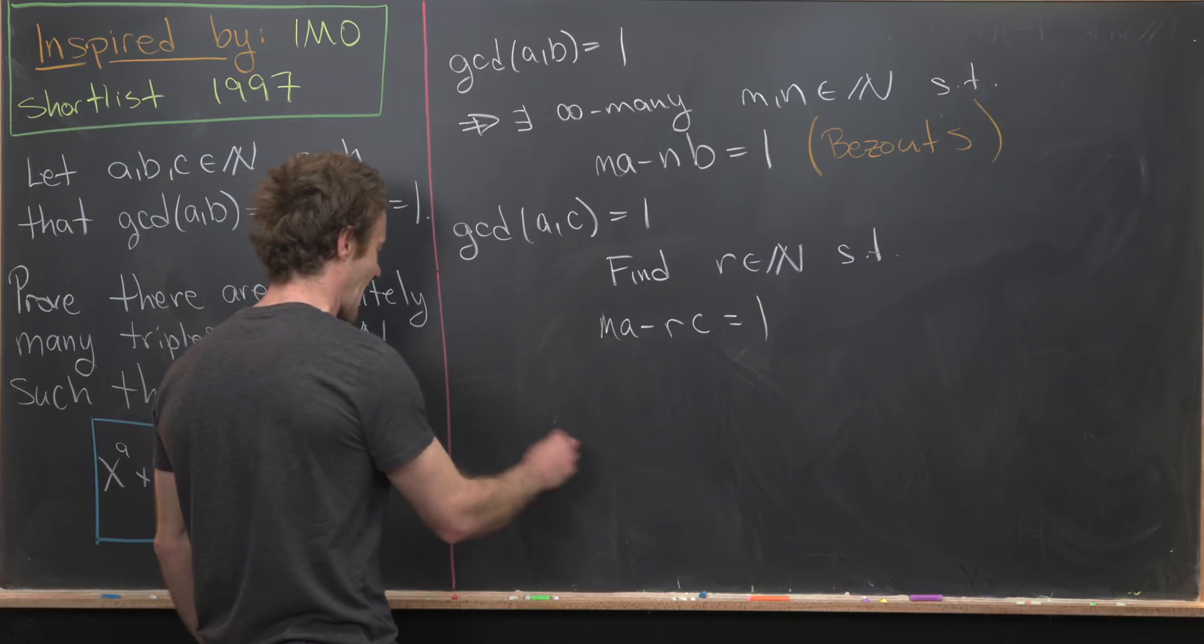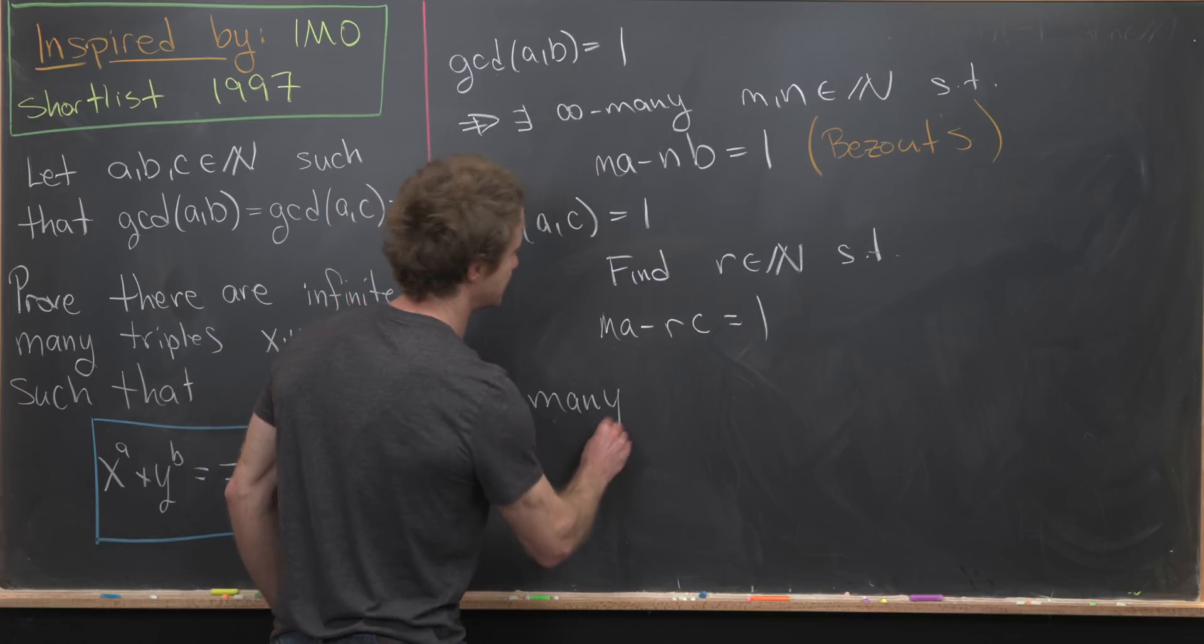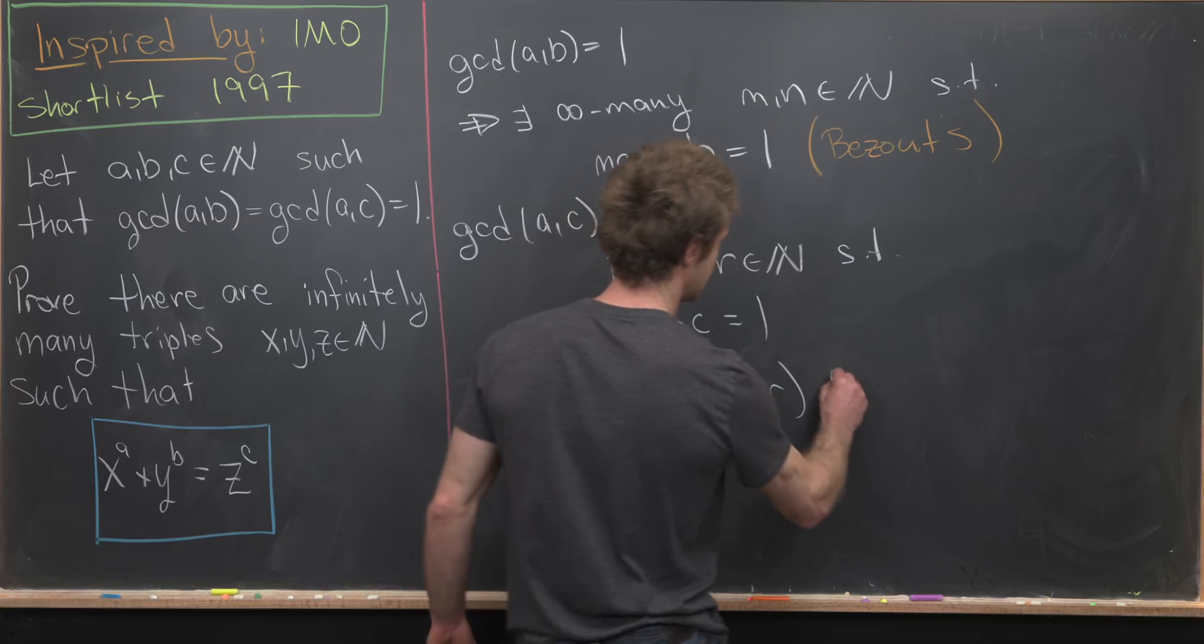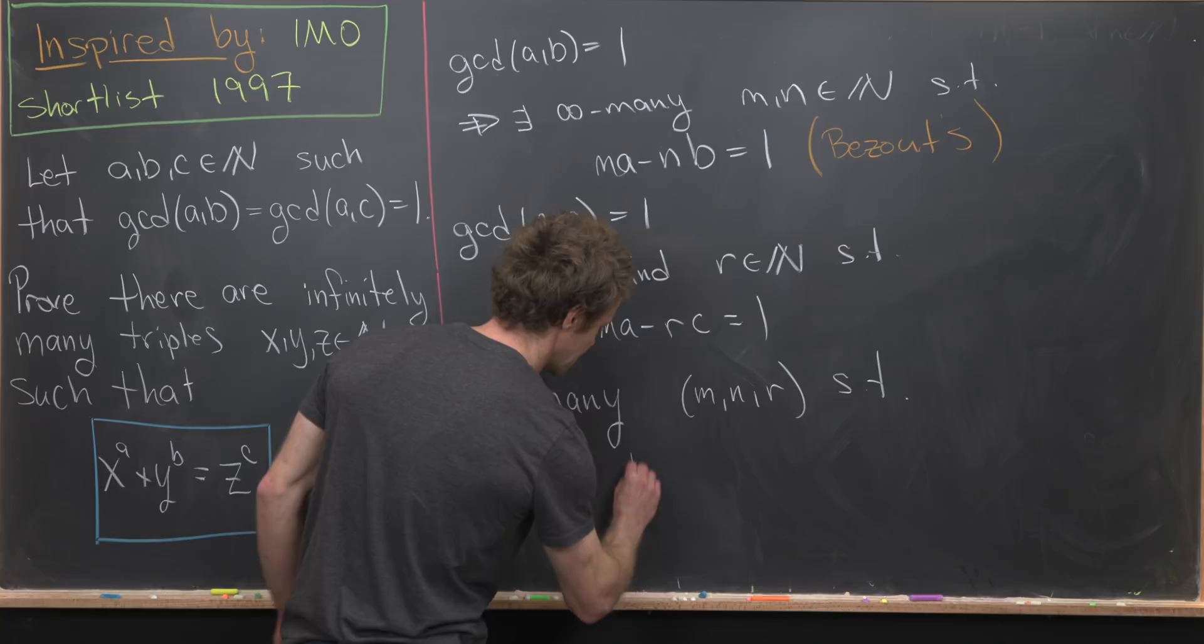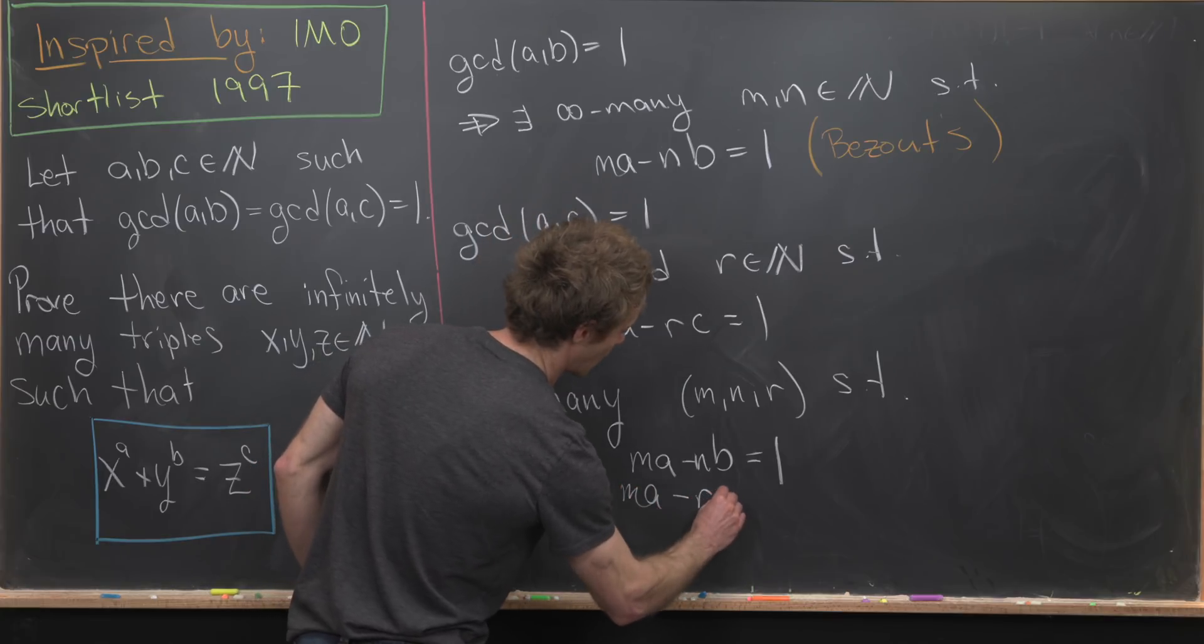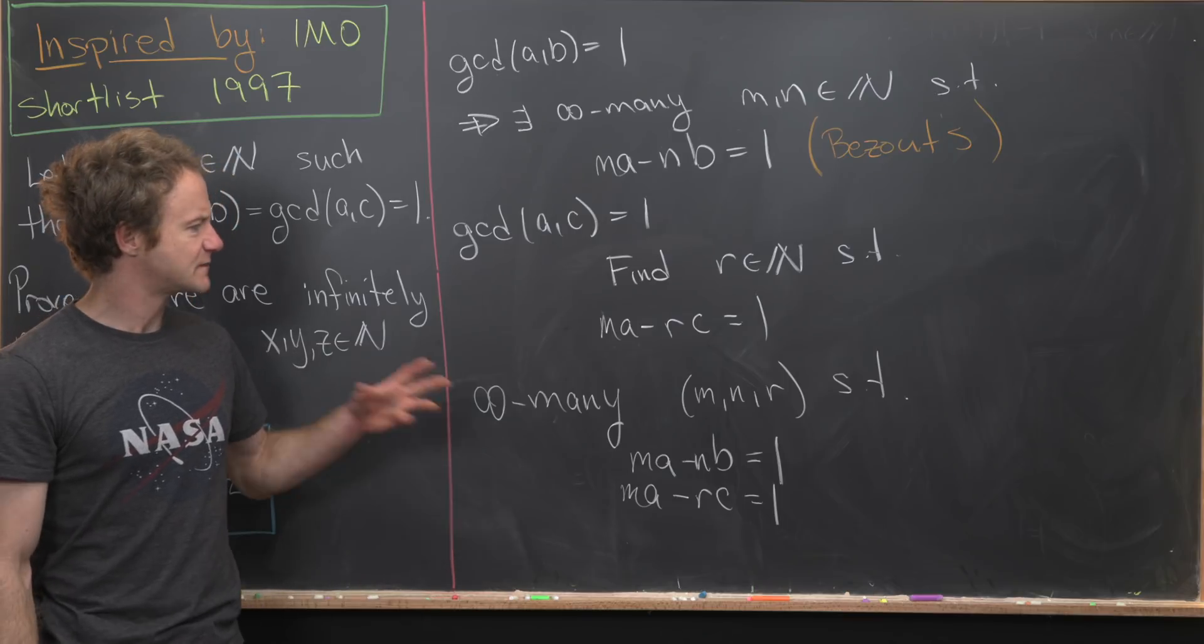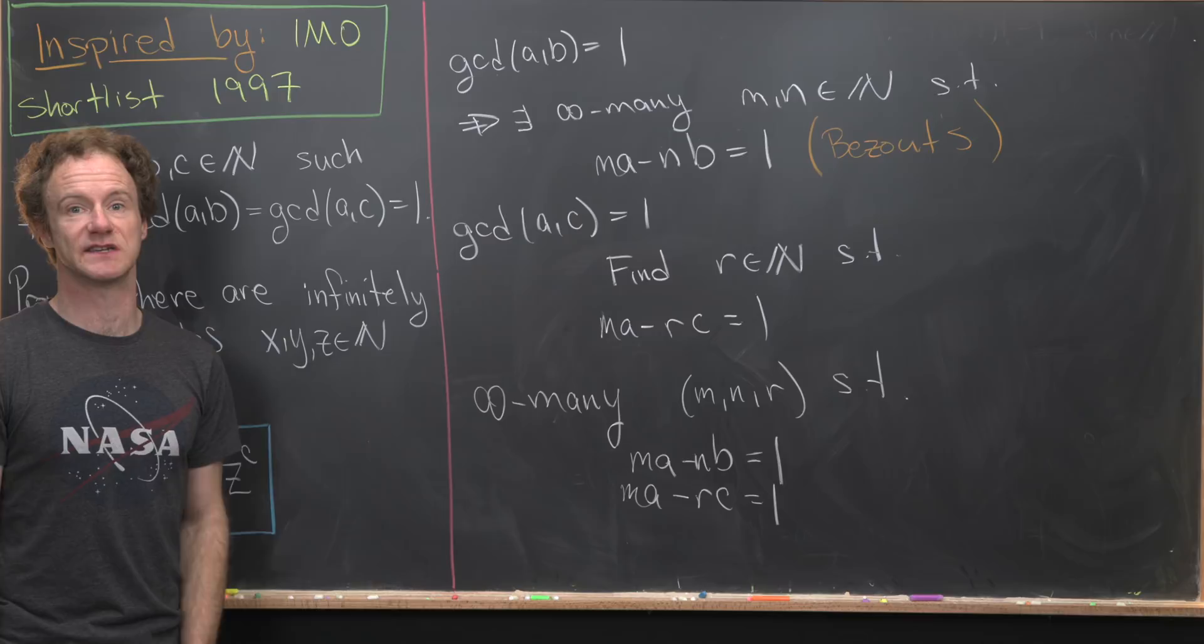So let's see what we have at the moment. We have infinitely many triples, and those triples are M, N, R, such that these two equations are satisfied: MA minus NB is equal to 1, and then MA minus RC is equal to 1. So let's maybe bring that fact to the top, and then we can start constructing some solutions.